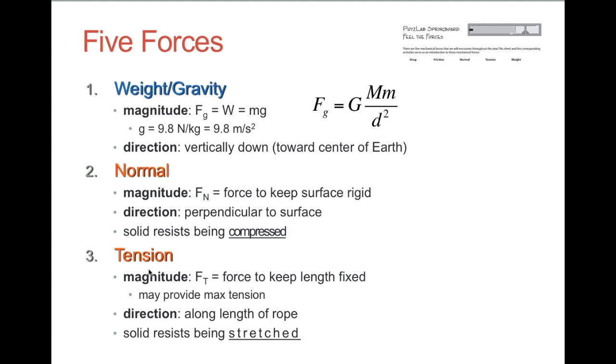Tension is another constraint force. We will assume that it will exert whatever force is necessary to keep a length of rope fixed. We may provide a maximum tension so that if the force required exceeds a certain value, then the string will break. Its direction will always be along the length of the rope. And this comes from the fact that solids, due to their atomic structure, will also resist being stretched.